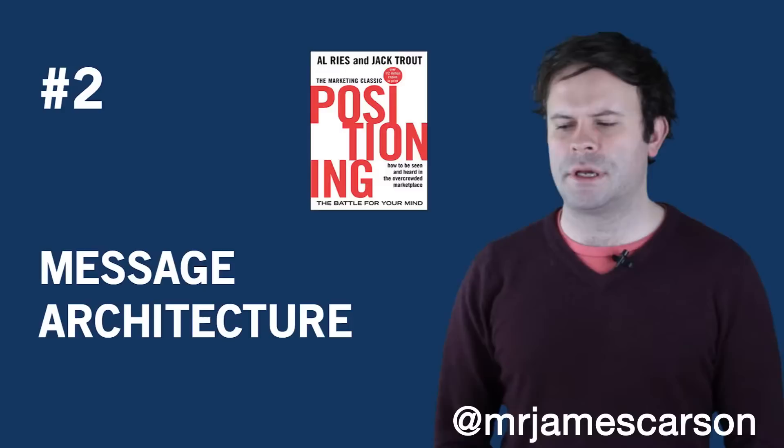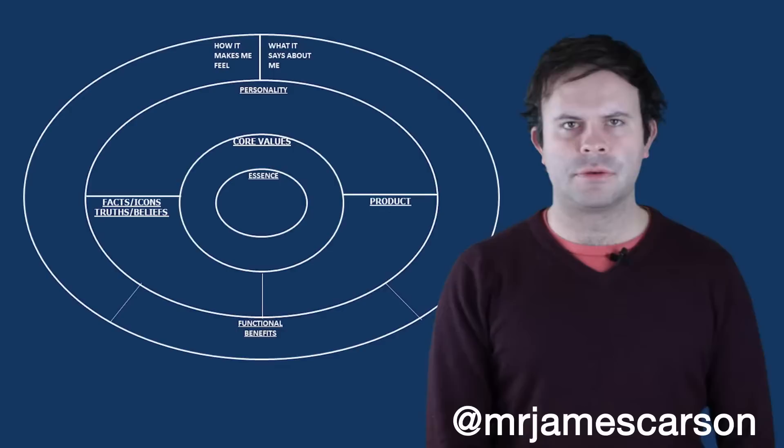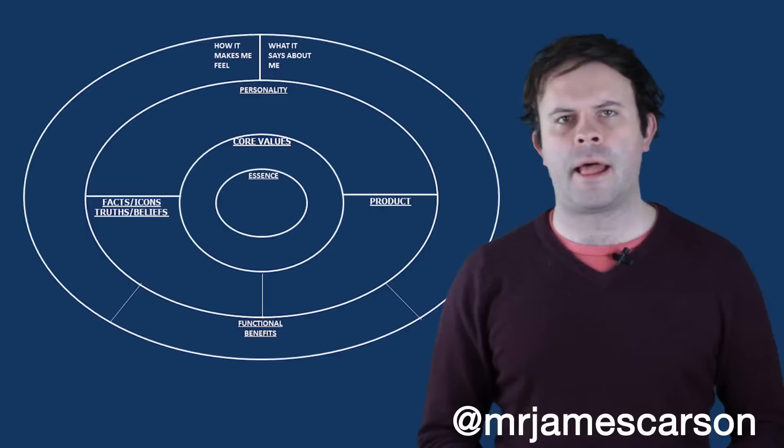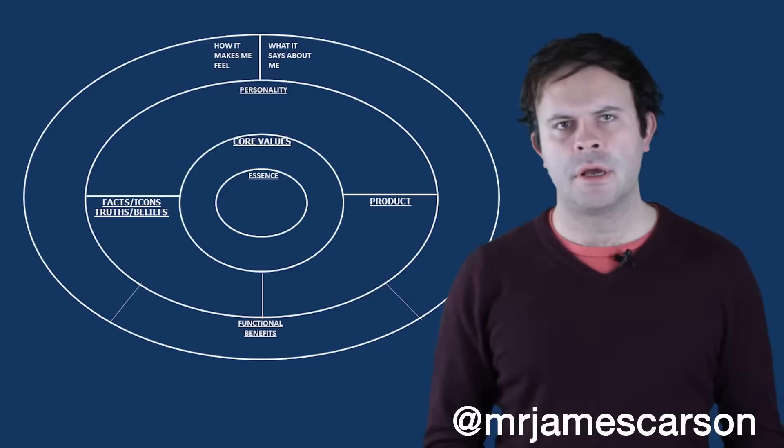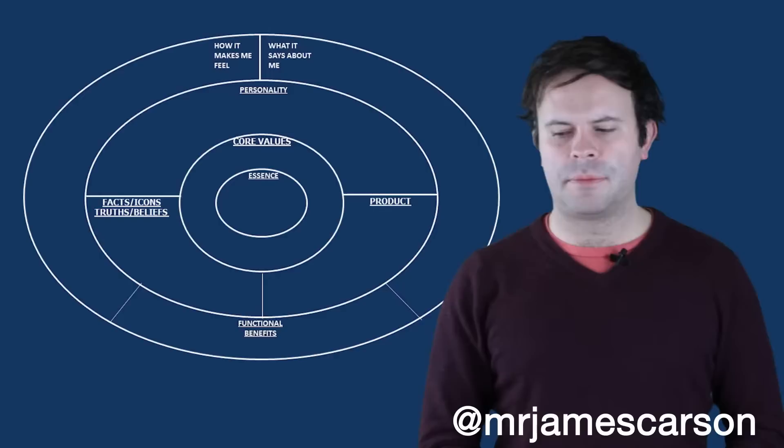Since you've got this persona, you can now build up a message architecture because you know who you're talking to. A great book around this is Positioning by Al Ries and Jack Trout. What you can get to is a kind of brand wheel, created through a card sorting exercise — get some index cards, put them in front of a group of stakeholders with different words or phrases, and they sort them into piles around themes: how it makes me feel, what it says about me, the personality of the brand, facts, icons, truths, and core values.